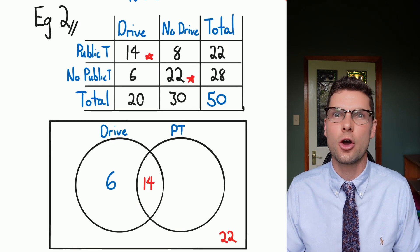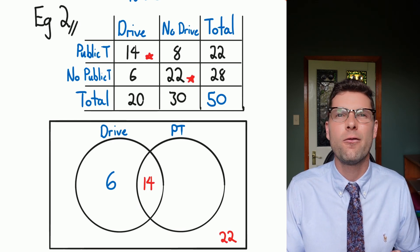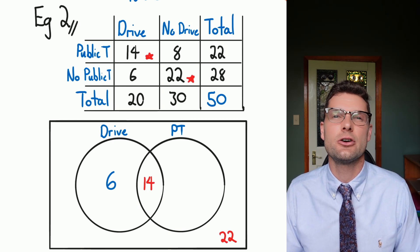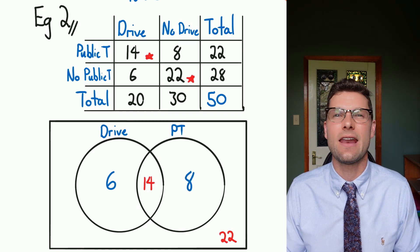And then I'm going to do the same thing for public transport. I know I've got 22 people in total that are using public transport, 14 are already accounted for, so it just leaves that 8 into that other circle.